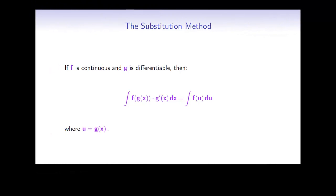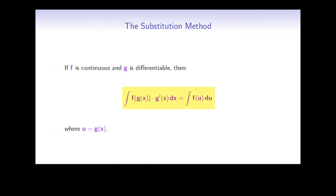Let's start by presenting the substitution formula. If f is continuous and g is differentiable, then the integral of f of g of x times g prime of x dx equals the integral of f of u du, where u equals g of x. This means that when we need to integrate a product of two functions — f of g of x, namely a composition of two functions, and g prime of x, the derivative of the inner function — then we can use this formula and basically integrate the function f only, with respect to the variable u, which equals g of x.